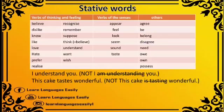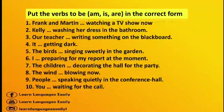Here are the verbs which do not use -ING — these are called static verbs. Some of these are thinking and feeling verbs, verbs of the senses, and others. For example: I understand you — we do not say 'I am understanding you.' This cake tastes wonderful — we do not say 'This cake is tasting wonderful.'